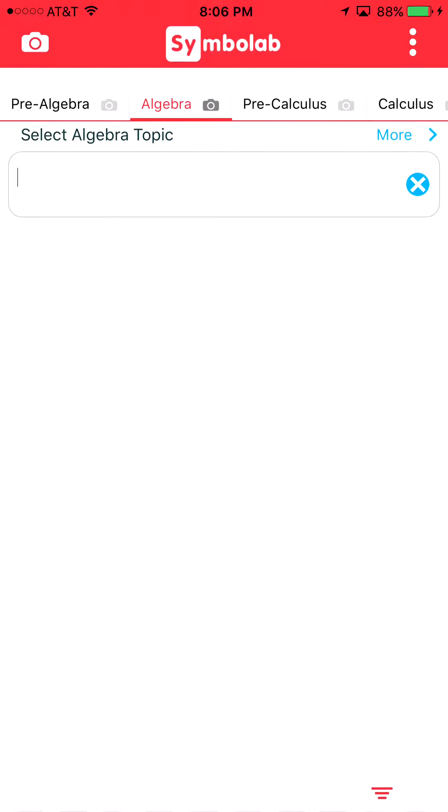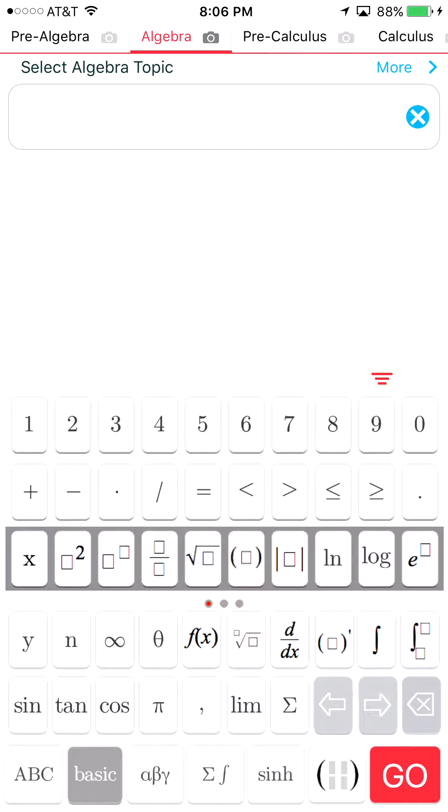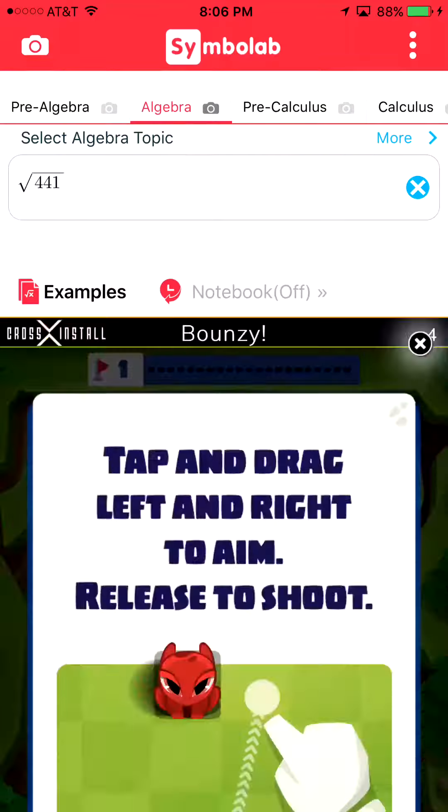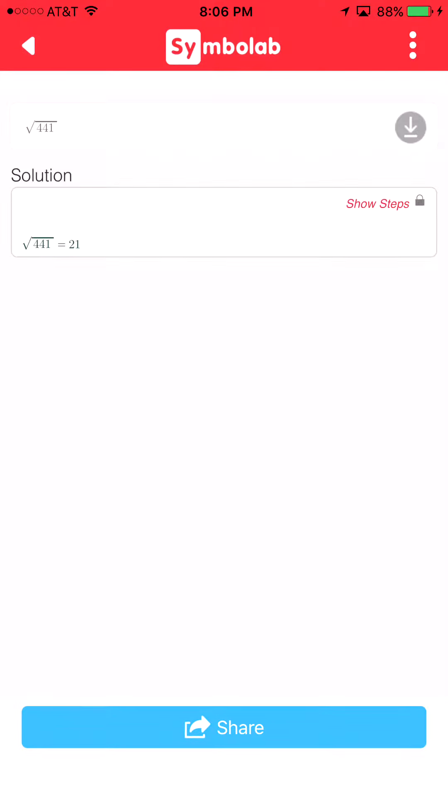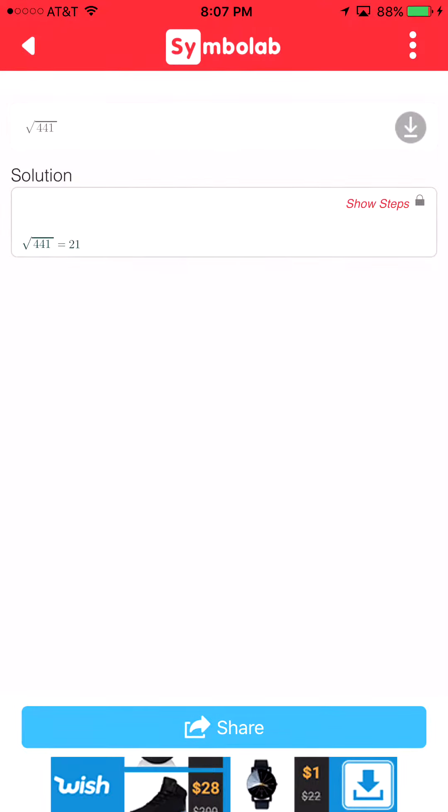Now, if the camera, for whatever reason, isn't picking up a variable, you can always go here. Go to the actual area where you type in numbers. Say you want to do the square root of 441. Hit go. The ad will pop up. Close the ad. It'll calculate. Boom. The answer is 21.